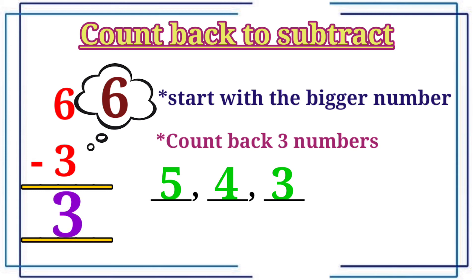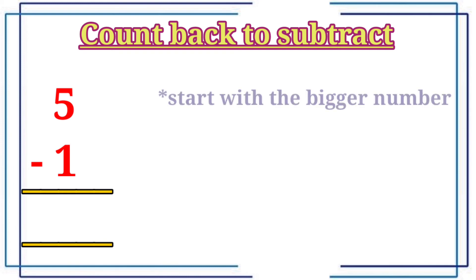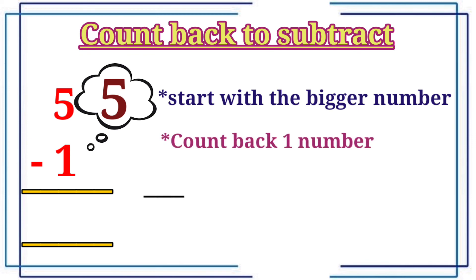Okay kids, let's see the next question. Five minus one. Start with the bigger number. Which one is bigger? Five. Very good. And count back one number. Four. Five minus one is equal to four.